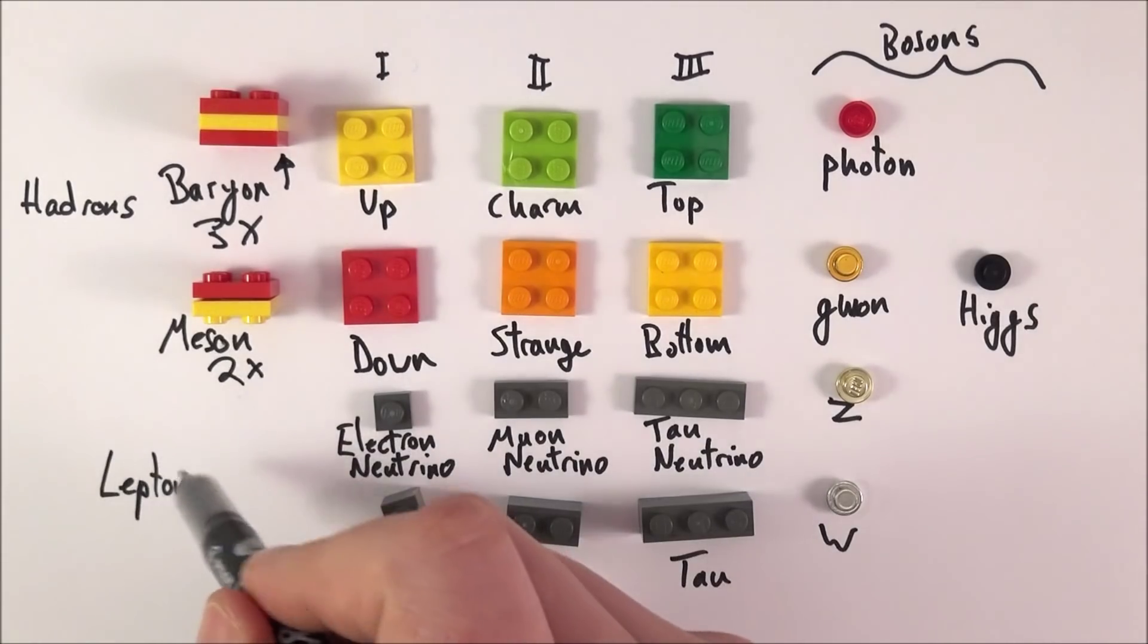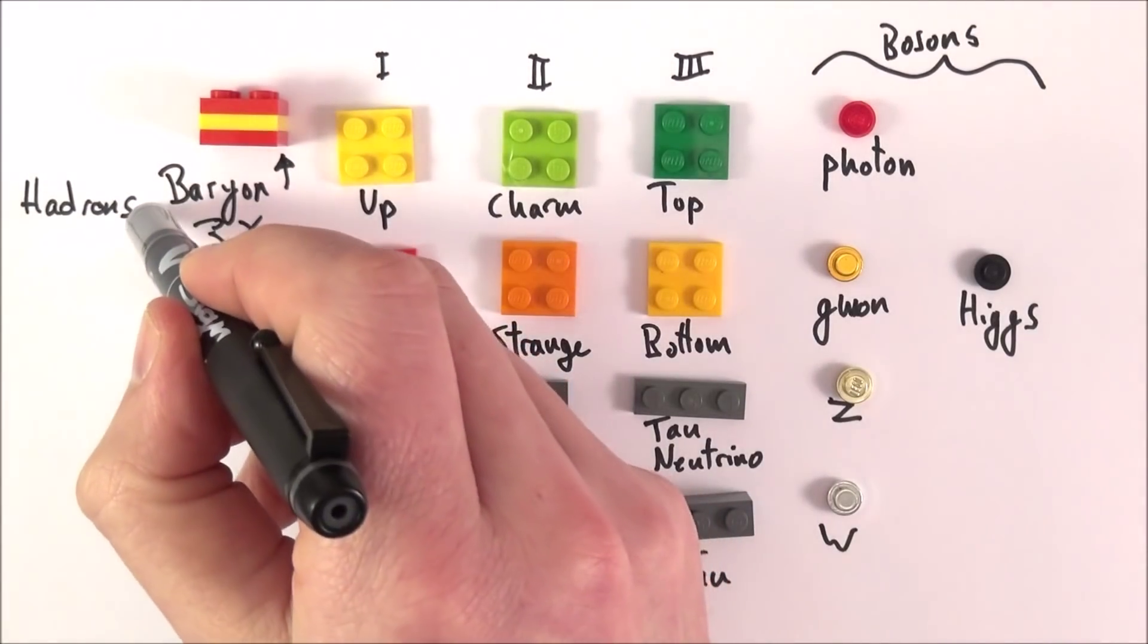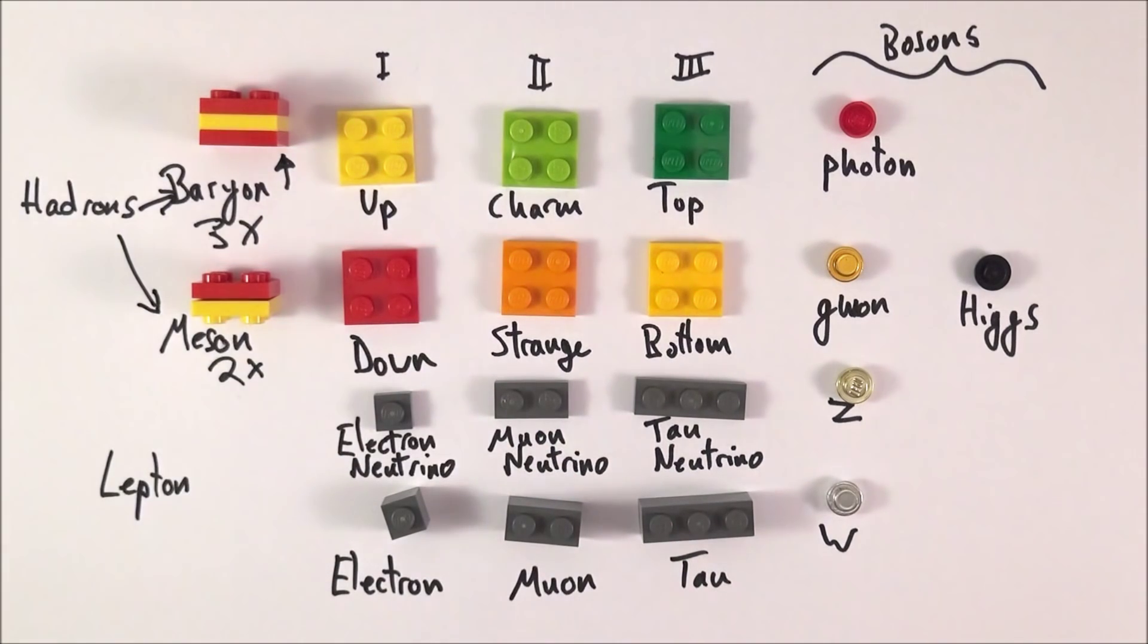Basically, we can think about leptons, we can think about hadrons. Hadrons, there's two sorts: there's baryons and there's mesons.